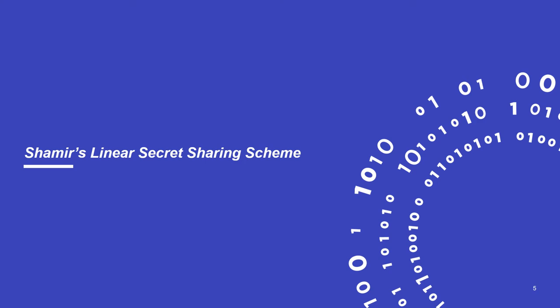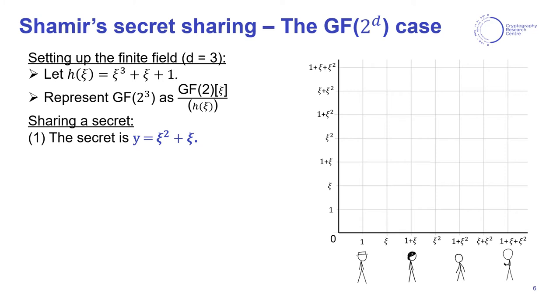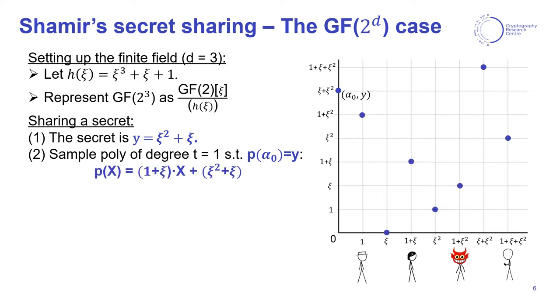Since our work will be based on a generalization of Shamir's linear secret sharing scheme to non-commutative rings, let us begin by reviewing this construction over finite fields. Imagine four parties wanting to share some secret y over the finite field with eight elements, here in our example x² + x. What they could do is sample a polynomial of degree equal to the maximum amount of corrupted parties among themselves, in such a way that this polynomial evaluates to the secret y at some fixed public point α₀, which is zero here in the example.